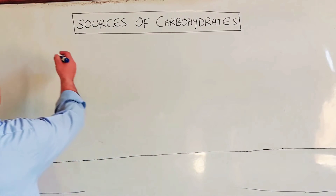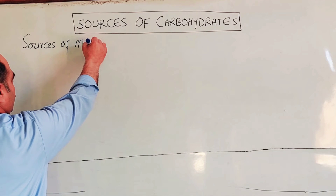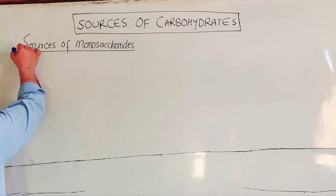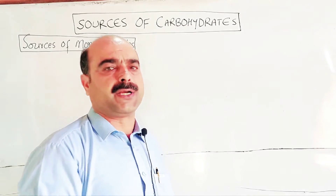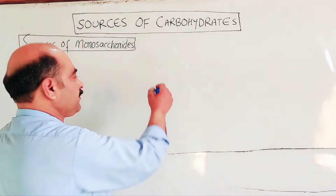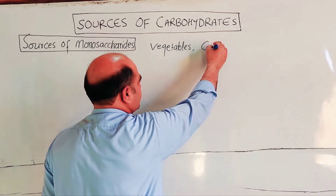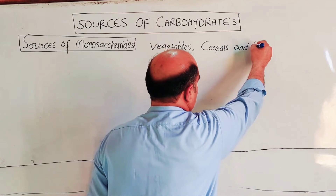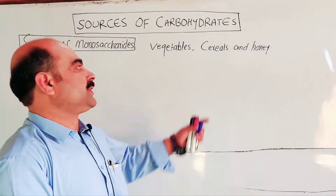The first category is the sources of monosaccharides. The main sources of monosaccharides include cereals and honey. Another important source is vegetables and cereals.